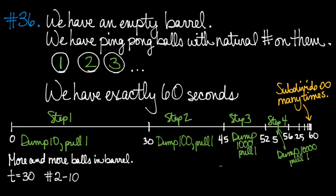At the 30 second mark, balls number two through 10 are in the barrel. That's nine. At 45 seconds, we put in 100 and pull out one. That means the balls with three painted on it through 110 are all in the barrel. At 52.5, balls number four through 1110 are all in the barrel. So that's 1106.